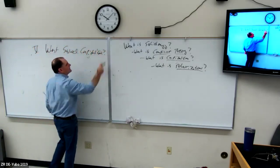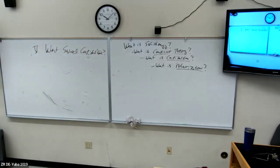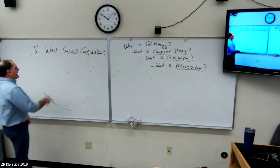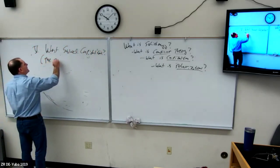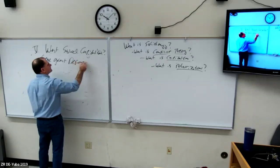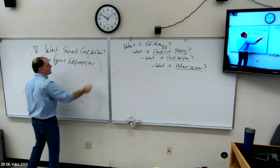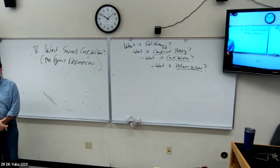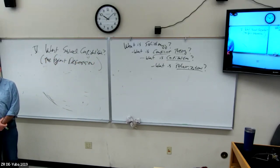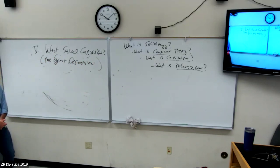We've asked what capitalism is and got conflict theory's answer: it maybe shouldn't still be here, or one day won't be, but it is here — so what saved it? I'm putting 'the Great Depression' in parentheses because it's not one of the things that saved capitalism, but because it happened, capitalism had to change. As it changed it became something a little more sustainable than it was before.